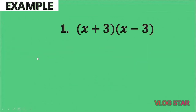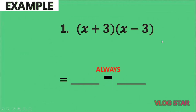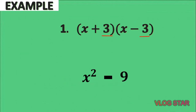For our first example, we have the quantity x plus 3 times the quantity x minus 3. As you can see, they are almost alike — one is plus while the other is minus. Setting up a binomial and putting a minus sign between them: squaring the first term gives x squared; squaring the second term, 3 squared, gives 9. The answer therefore is x squared minus 9 — obtained easily without applying the distributive property.